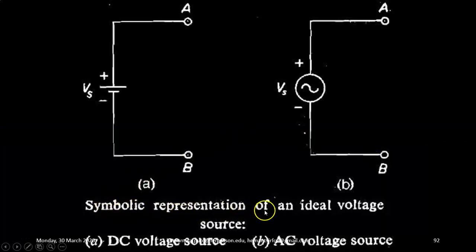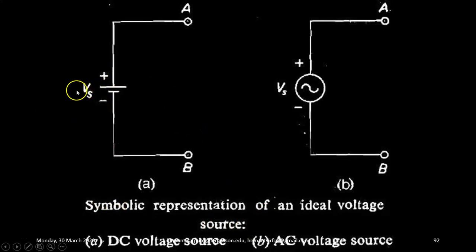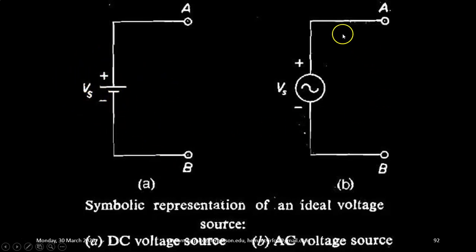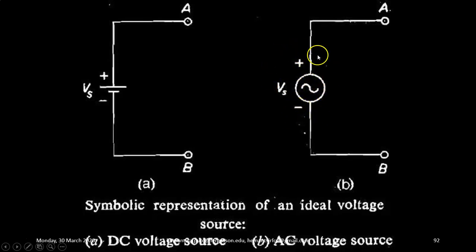This is the symbolic representation of an ideal voltage source. For a DC voltage source, this is the symbol, providing a voltage Vs across the two terminals. This is the symbol of an AC voltage source, which also provides Vs across the two terminals. Actually, for AC there is no positive and negative terminals, so that is a mistake in this particular symbol. I regret for this mistake.